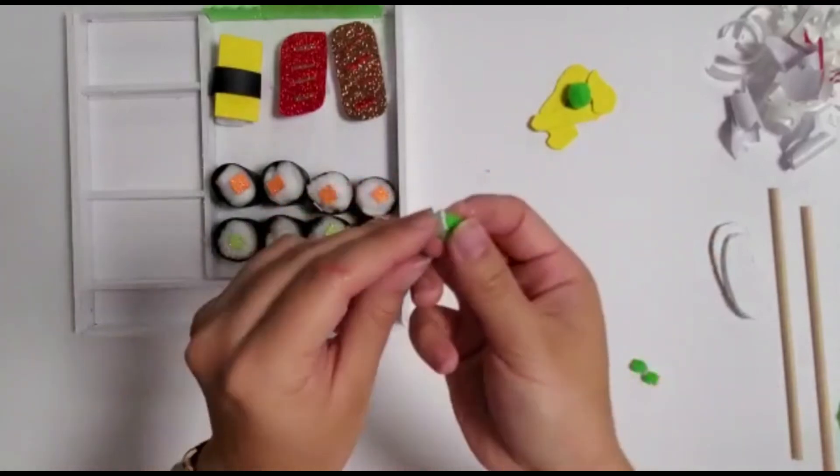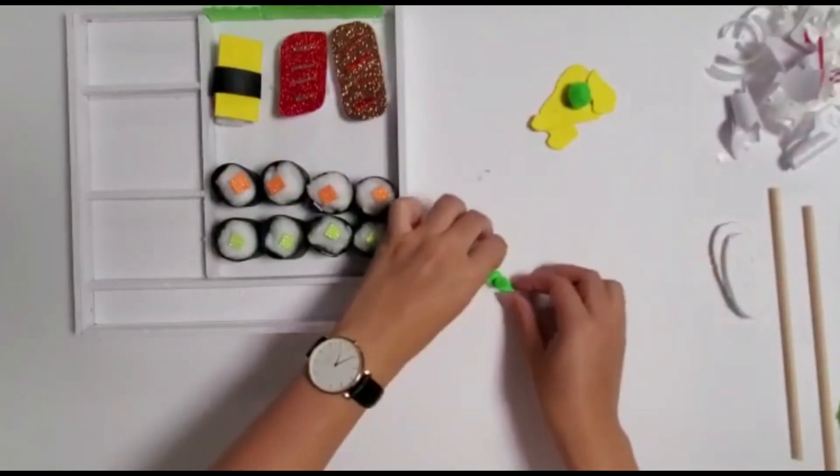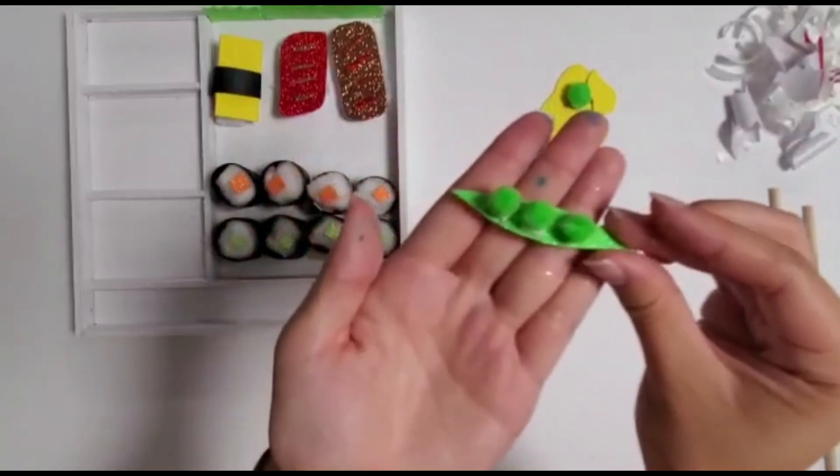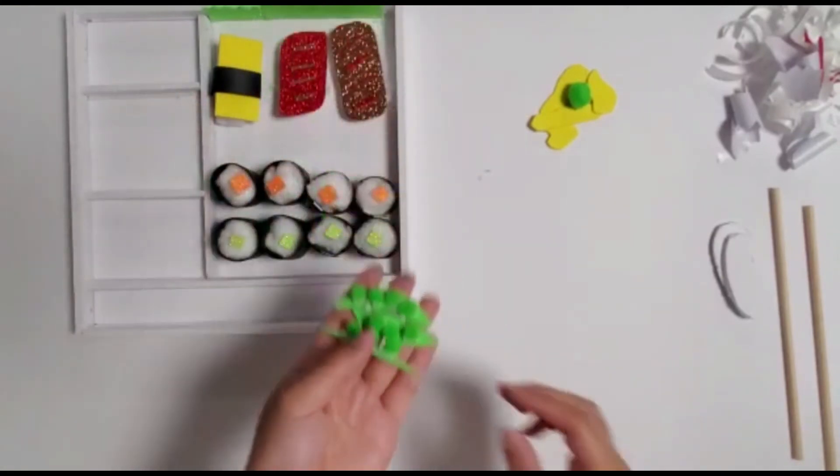Now we're going to make some edamame or soybean pods. Grab the curved pieces of green foam and stick three small pom poms onto it to make a bean pod. Make three total edamame and place them into one of the smaller sections of the bento box.